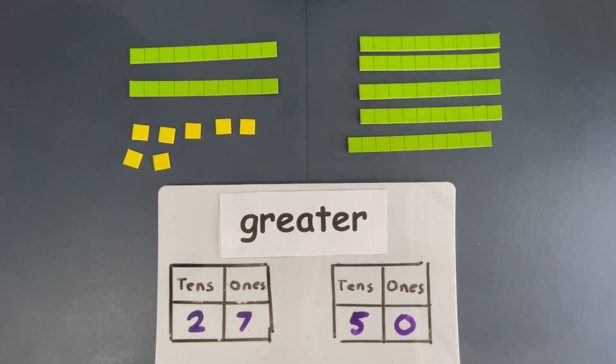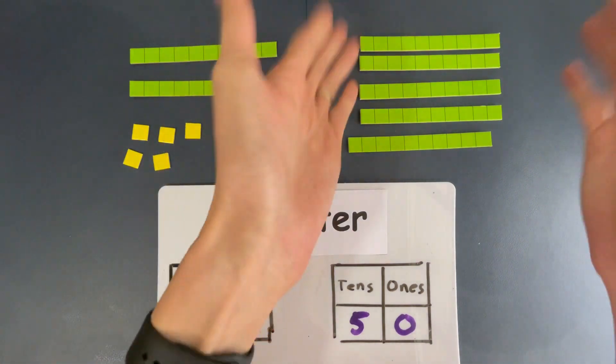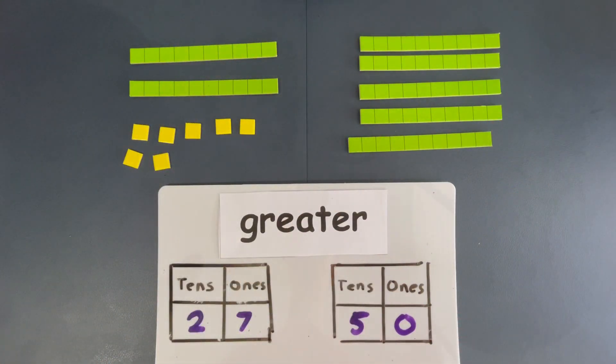Which is greater? Can you tell? It is this one. 50. There are more squares here than here. So, this is the greater number. 50. Okay?